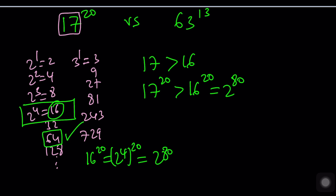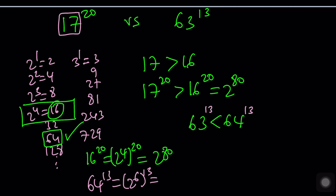63 is less than 64. So if we raise both sides to the power 13, the inequality is maintained because 63 and 64 are both greater than 1. We can write 64^13 as (2^6)^13 = 2^78, since 6 times 13 is 78. So we set it equal to 2^78.